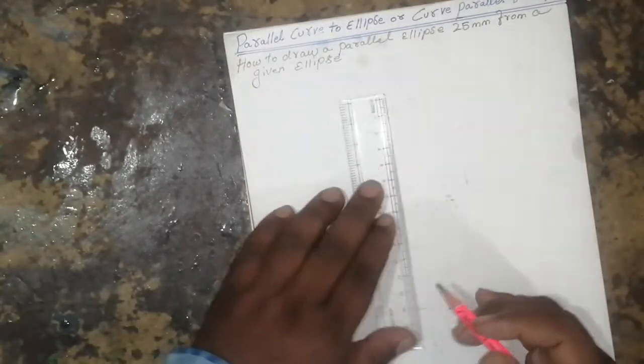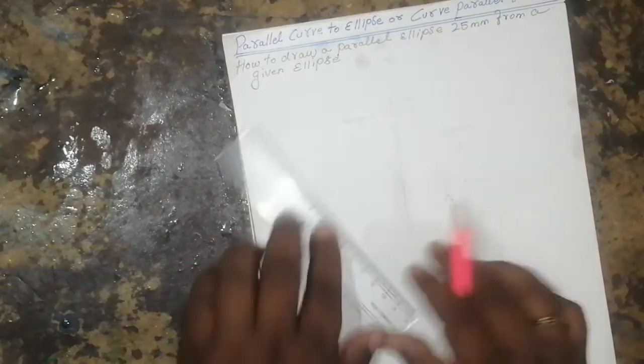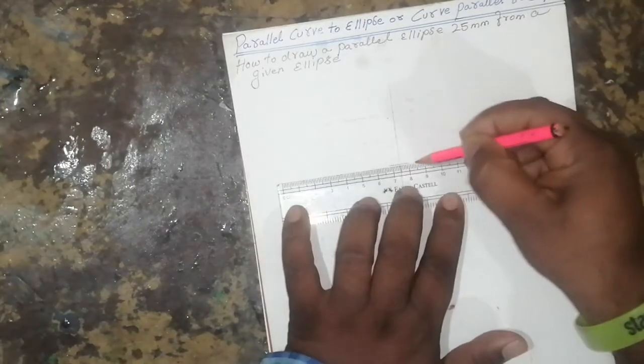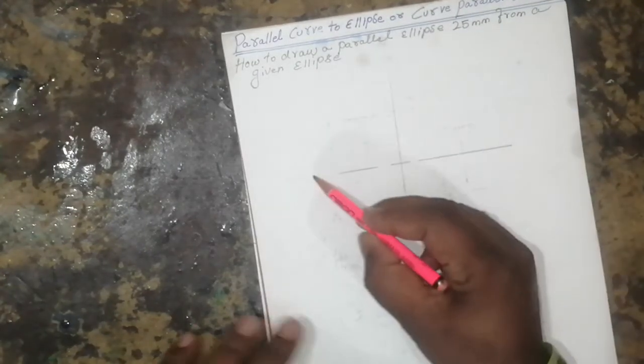See, the axis line will be like this, so the ellipse will come like this.